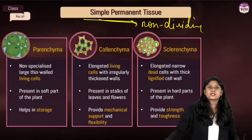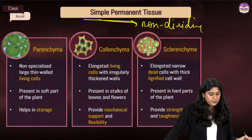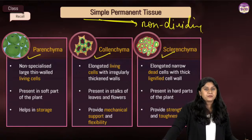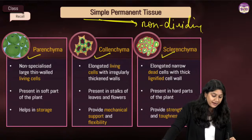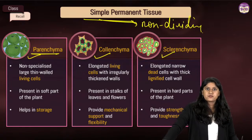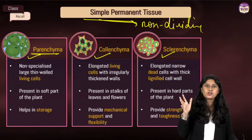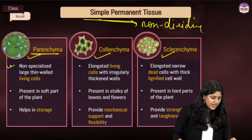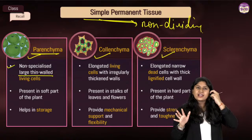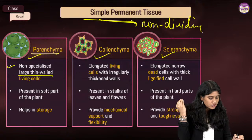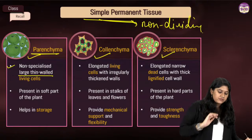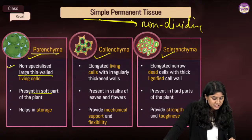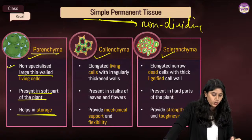From meristematic tissues, these cells differentiate and become simple permanent tissue — they are non-dividing cells. We have three important categories: parenchyma, colenchyma, and sclerenchyma. Parenchyma is very important and plays a key role in storage. They are non-specialized, irregularly shaped, have a very thin wall, and are living cells present in the soft part of the plant.